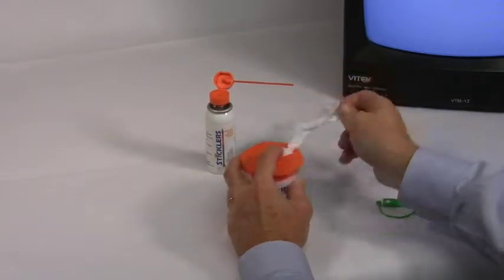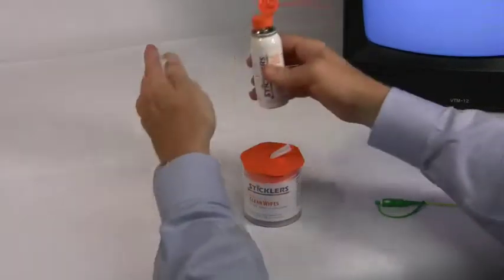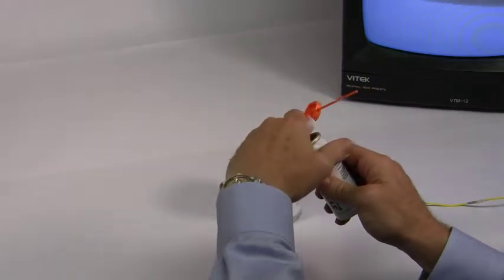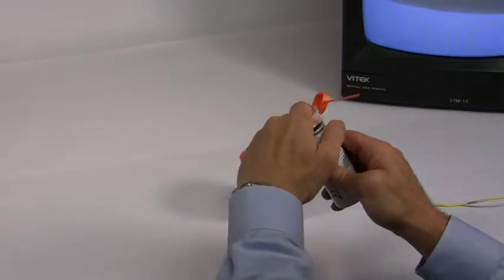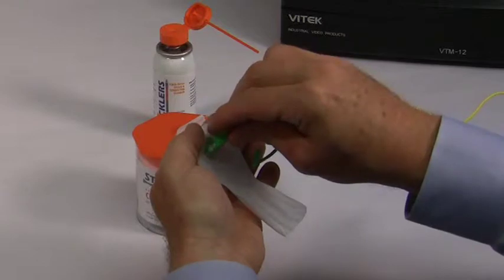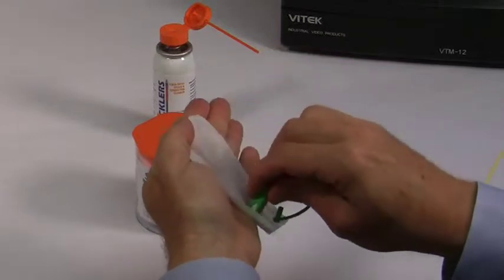To use, carefully hold the wipe between the thumb and forefinger with fabric draped across the palm of your hand. Apply Stickler's Fiber Optic Splice and Connector Cleaner to a corner and draw the end face across the wipe from wet to dry.